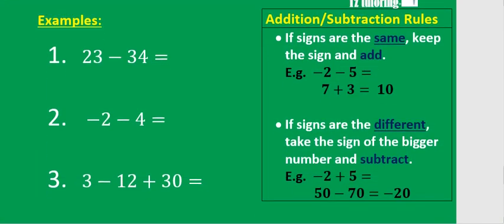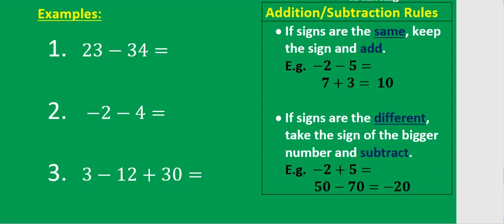Now the rules of integers — let's start with addition and subtraction. The rules are: if the signs are the same, keep the sign and add. For example, negative 2 and negative 5 have the same sign, so you keep the negative and add 2 plus 5 to get negative 7. If both signs are positive, you get positive 10.